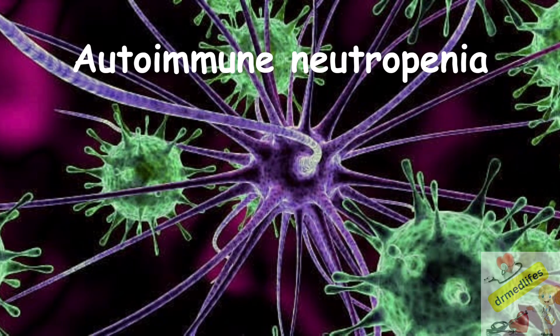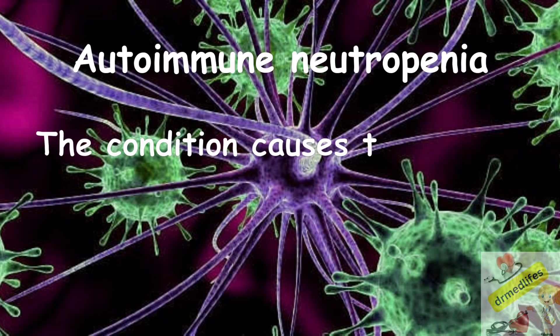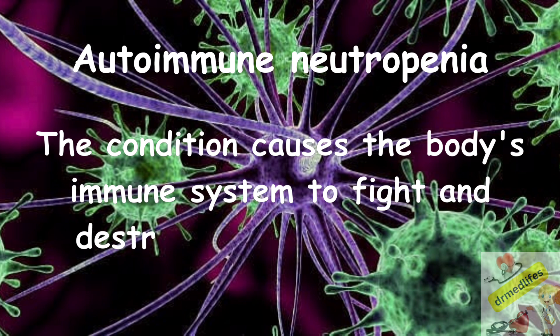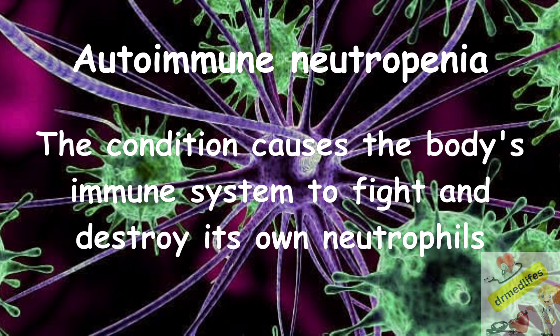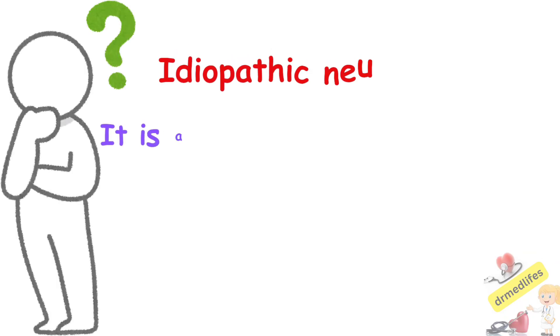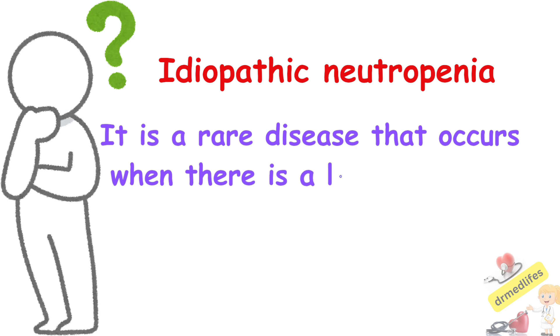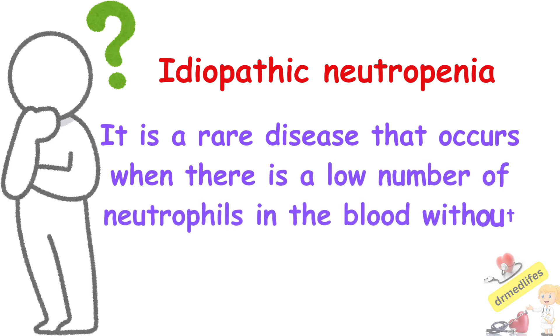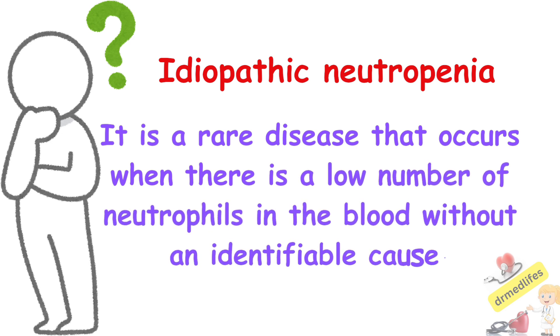The third type is autoimmune neutropenia, a condition in which the body's immune system fights and destroys its own neutrophils. The fourth type is idiopathic neutropenia, a rare disease that occurs when there is a low number of neutrophils in the blood without an identifiable cause.